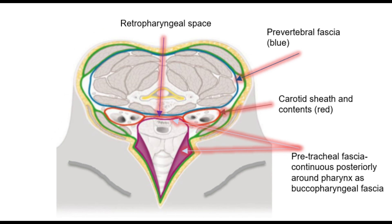Between the prevertebral fascia and the buccopharyngeal fascia lies a deep neck space known as the retropharyngeal space. This is an area where infection and abscesses may collect. Given that the inferior extent of the retropharyngeal space passes into the thorax and the mediastinum, there is a risk that infections here could also spread into these areas of the chest.